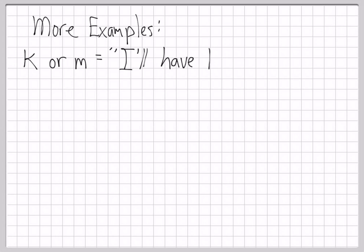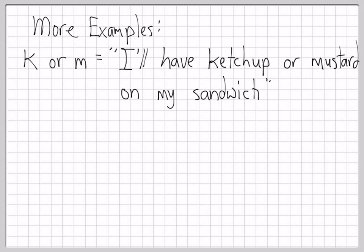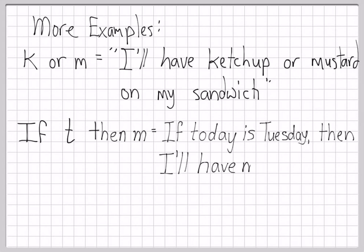Here are some more examples. The third connective is or. k or m would stand for I'll have ketchup or mustard on my sandwich. The fourth connective is if then. If t then m: If today is Tuesday then I'll have mustard on my sandwich.